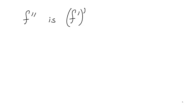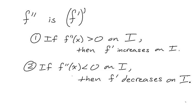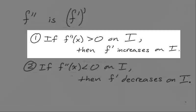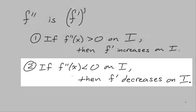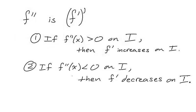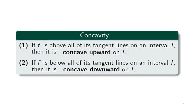As the second derivative f'' is the derivative of the first derivative f', using the increasing-decreasing test, if the second derivative is positive, then the first derivative is increasing. If the second derivative is negative, then the first derivative is decreasing. Like with the first derivative, you can see in the shape of the graph whether the second derivative is positive or negative.